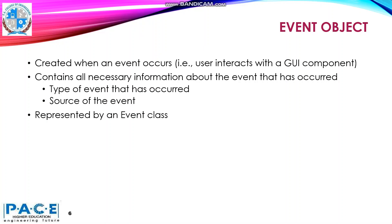And the third is the Event Object. Event Object is created when an event occurs, that is when the user interacts with the GUI component. The Event Object contains all the necessary information about the event that has occurred. For example, the type of the event and the source of the event. The Event Object is represented by an Event Class — it is an instance of an Event Class.